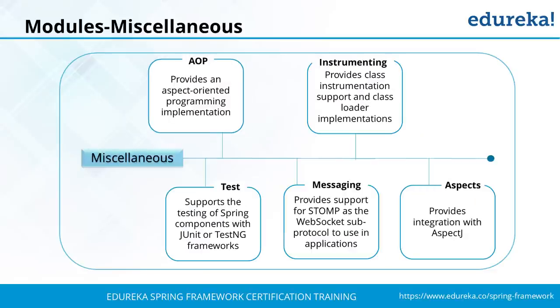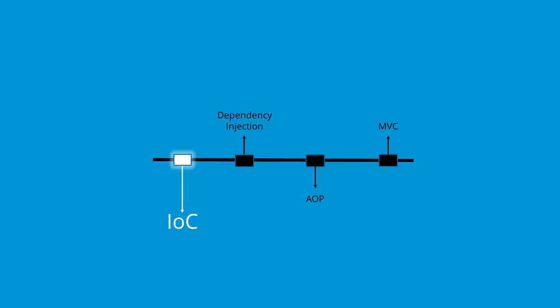Miscellaneous modules include AOP for cross-cutting concerns, instrumentation for class instrumentation and class loader implementation, AspectJ integration for fulfilling cross-cutting concerns, and messaging. The testing layer supports JUnit and TestNG for unit and integration testing. This is why Spring is called a framework of frameworks — it integrates many other frameworks within itself.